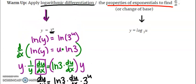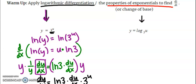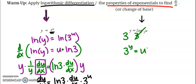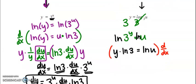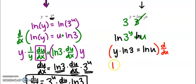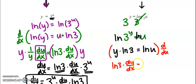The next problem says to use properties of exponentials or change of base. I'm going to rewrite this as 3 to the y equals u — the logarithm and exponential cancel. Now I take the natural log of both sides, giving y times the natural log of 3 equals the natural log of u. No calculus yet. Taking the derivative with respect to x: natural log of 3 is a constant, so it hangs out times dy/dx. The right side gives 1 over u times du/dx.